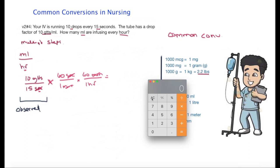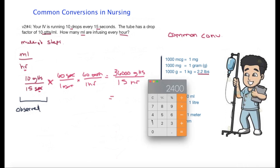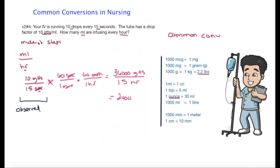Multiply everything on the top and I get 36,000 drops. Multiply everything on the bottom and I get 15 hours, and I can continue to solve for this and I get 2,400 drops per hour.